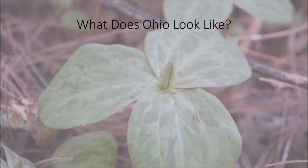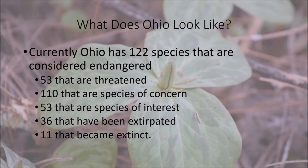What does Ohio look like when it comes to endangered species? This information came from the Ohio Division of Wildlife website. Currently we have about 122 endangered species, 53 that are considered threatened, 110 that are species of concern, 53 species of interest, 36 that were extirpated from the state of Ohio, and 11 that became extinct. At the end of the presentation, a link will be provided to find current information on all these categories.